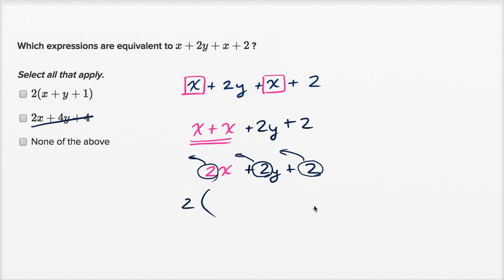So this is going to be 2 times x. I'll do the x in that same magenta color. 2 times x plus, you have just a y left when you factor out the two. And then if you factor out a two here, you're just going to have a one left. So 2 times x plus y plus one. Which is exactly what they have over here. And since I was able to find a choice, I will not pick none of the above.